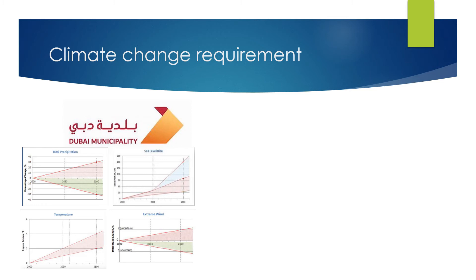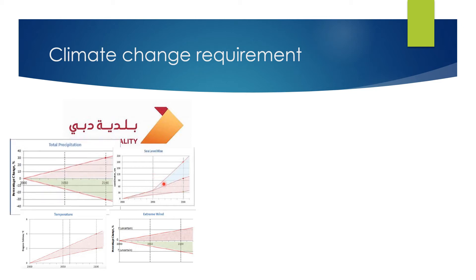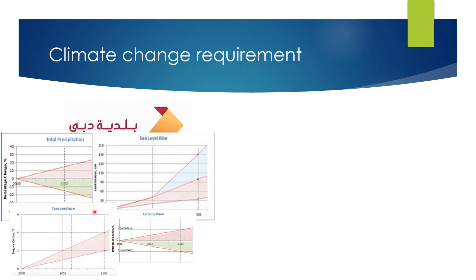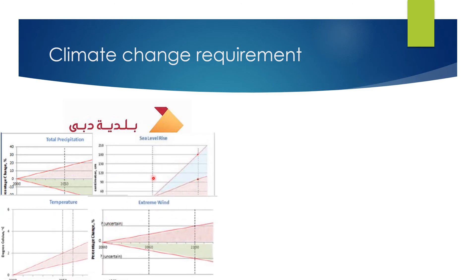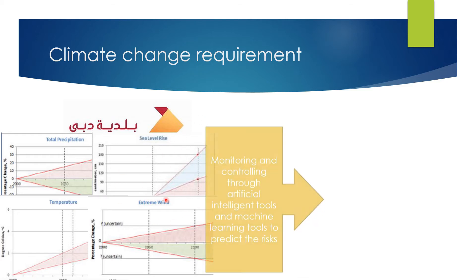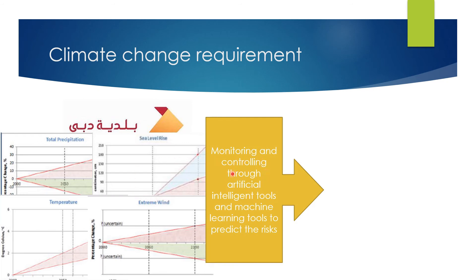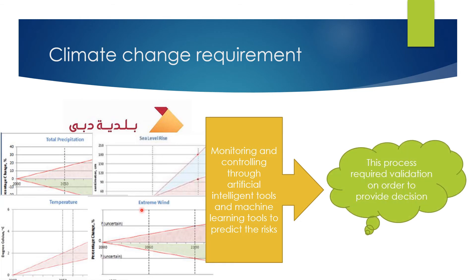Based on a study done by Dubai Municipality, the climate change elements to understand include total precipitation, sea level rise, temperature, and extreme weather events. These will have a big change over the next 100 years, and we must adapt and mitigate these changes. Monitoring and controlling through artificial intelligence and machine learning tools will predict the risks from these four elements, and this process requires validation to provide decisions on how to reduce their impact.